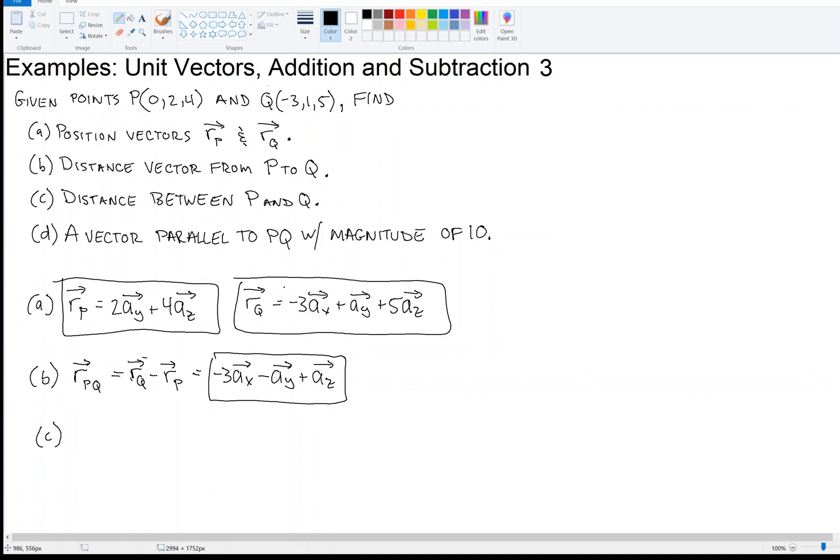So we want the distance between P and Q, so now what we do is we take the magnitude, or the norm, of that distance vector. So we just want the norm of that guy, minus 3 AX, minus AY, plus AZ, right? We want the norm of that guy, well, how do we get the norm of that? How do we get its magnitude?